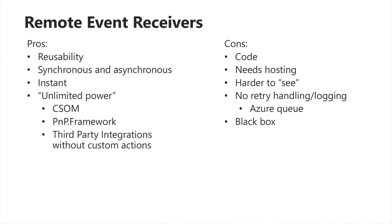Another thing we get from Power Automate is retry logic and logging — a really nice overview of when a flow has run, whether it failed or succeeded. We don't really get that with remote event receivers; they're kind of fire and forget. If it fails, it fails. You can use Application Insights to check if your job failed or not. Another option is using queues — whenever the remote event receiver triggers, you can write to a queue instead of just executing your code and saying 'done.' So there are definitely pros and cons for both.